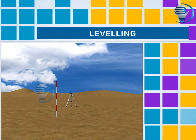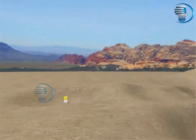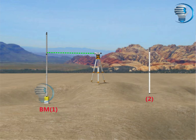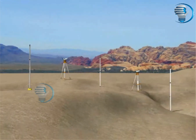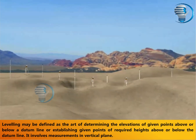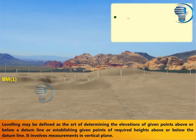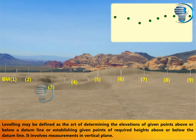Let us see what leveling is. Leveling may be defined as the art of determining the elevations of given points above or below a datum line, or establishing given points of required heights above or below the datum line. It involves measurements in the vertical plane.